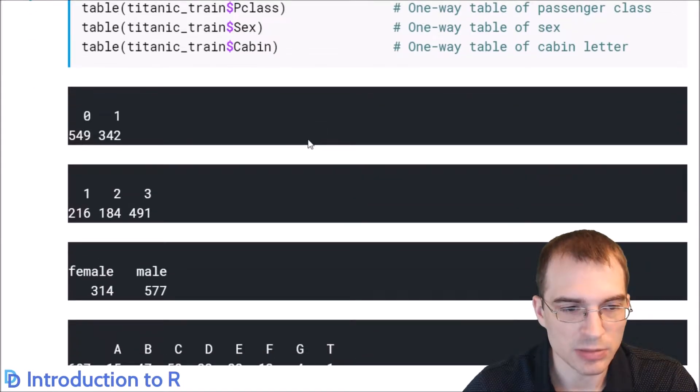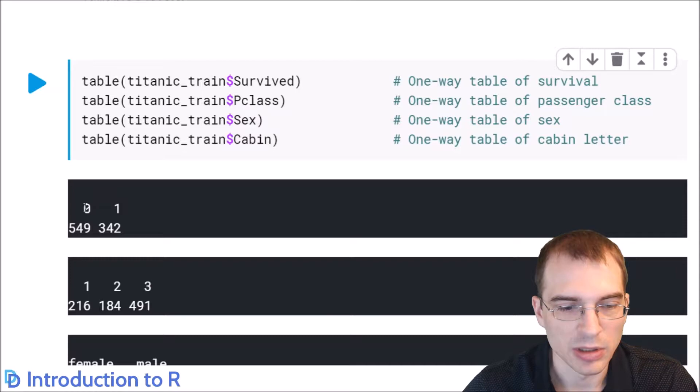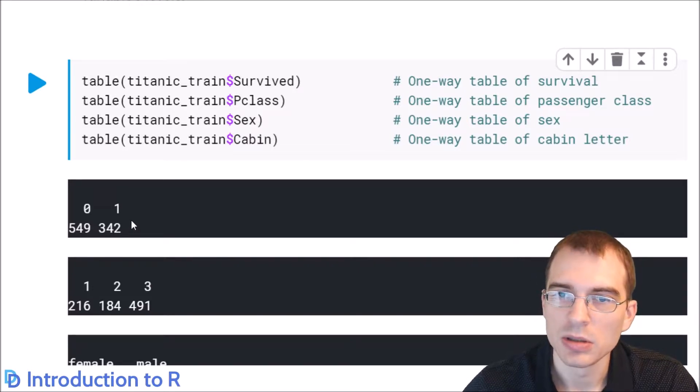So you can see the table shows the names of the categories for survived. It's just 0 and 1 because it's false and true. And then it shows the counts. So we can see 549 and 342. This is a pretty simple thing to do, but it automatically gives us a sense of the distribution of the categorical variable. From this right away, we see that more people perished at 0 or false on survived than the people that did survive.